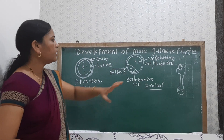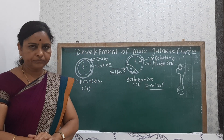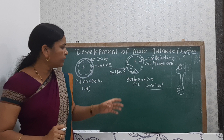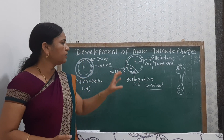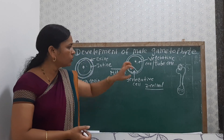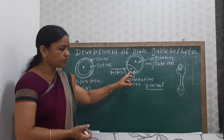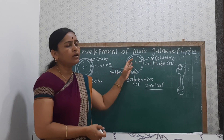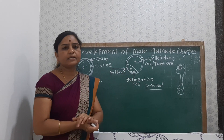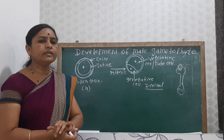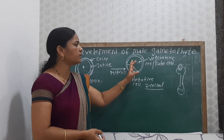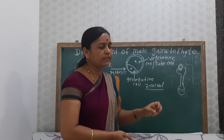The vegetative cell or tube cell is the larger cell, whereas the generative cell is the smaller cell. The generative cell is mainly floating in nature within the vegetative cell, which has dense cytoplasm. In some plants, when the pollen grain is still in the pollen sac, the generative nucleus divides and the pollen grain becomes three-celled. So in some cases, a three-celled pollen grain may be transferred. But mainly the two-celled pollen grain is transferred, and when it falls on the stigma, germination takes place.